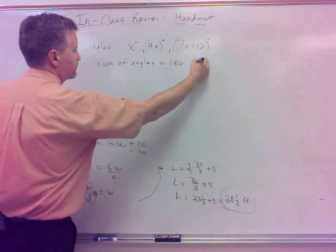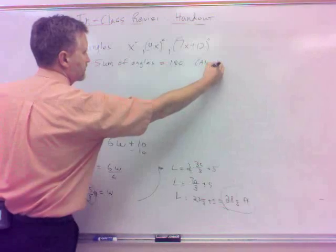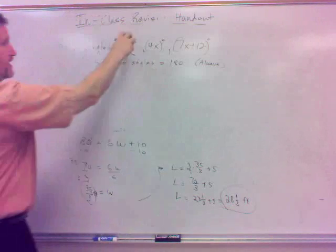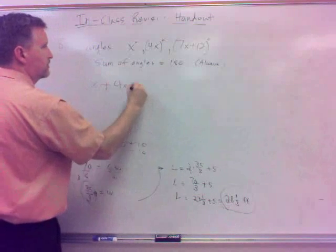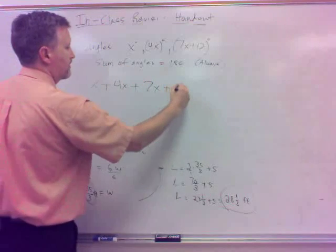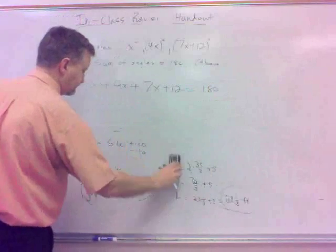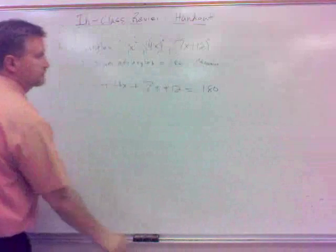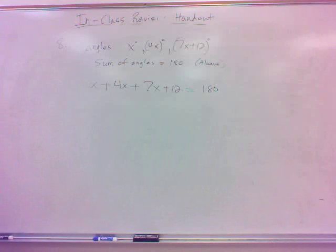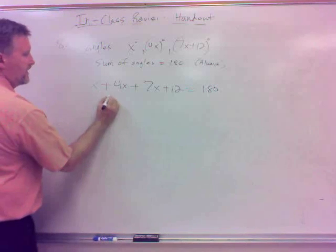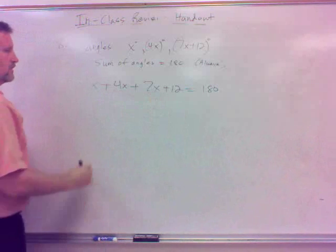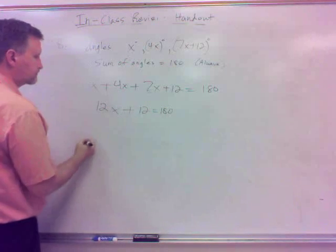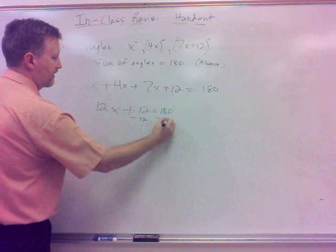Well, there's a couple of formulas you might want to remember. This is one of them. Angles of a triangle, the sum of the angles always is 180. Always. Doesn't matter what triangle it is, it's always 180. Sum of them. So I'm going to add these angles, right? x plus 4x plus 7x plus 12, and that's going to equal 180.